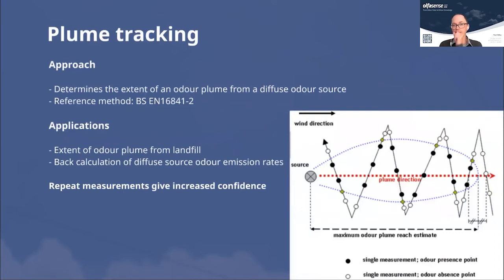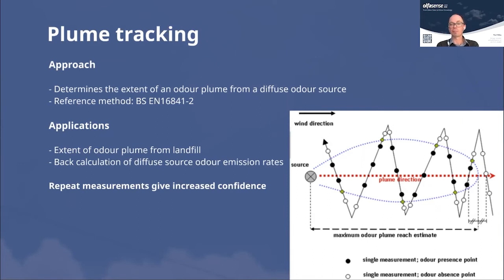Plume tracking is a more advanced sniffing assessment using typically two to ten human assessors in the field. An odour plume from a facility — typically a diffuse source — is tracked by starting downwind and continuously traversing the plume, marking where the odour is and isn't detected, and building up a picture of the extent of the plume. The reference method is BS EN 16841, which is applied on fairly large projects, particularly where the odour source is difficult to pinpoint, such as a landfill. The more measurements undertaken, the more confidence can be had in the results.